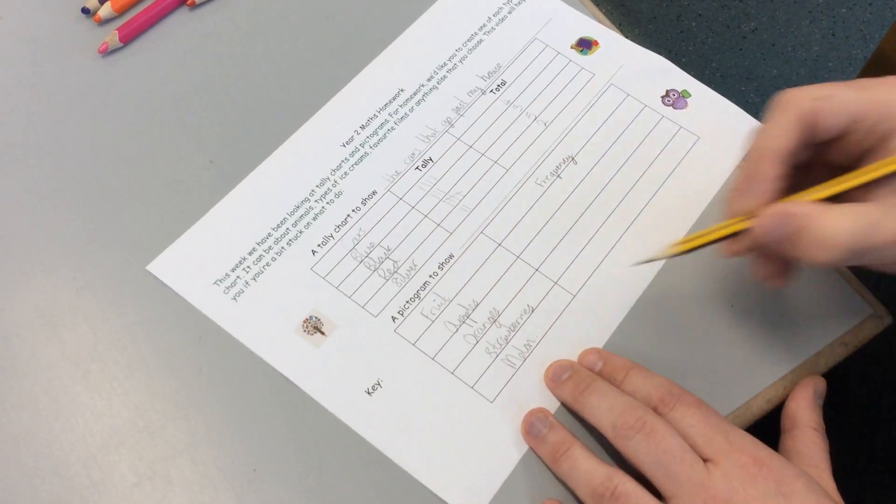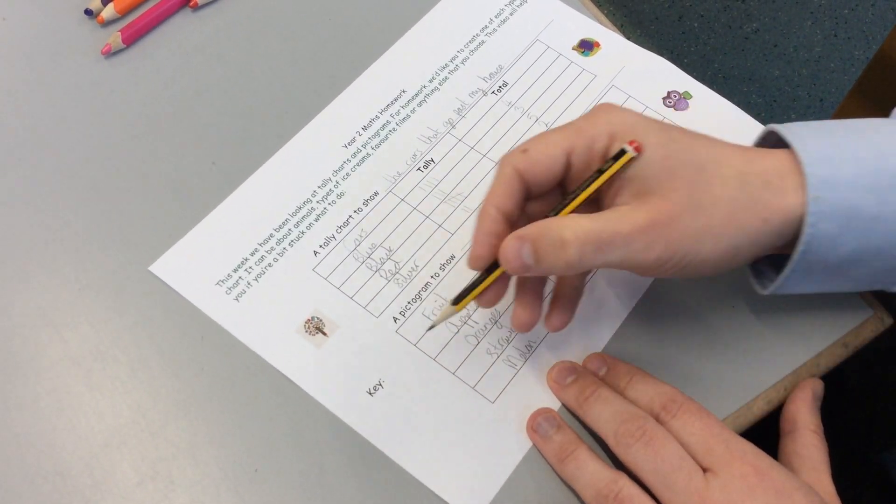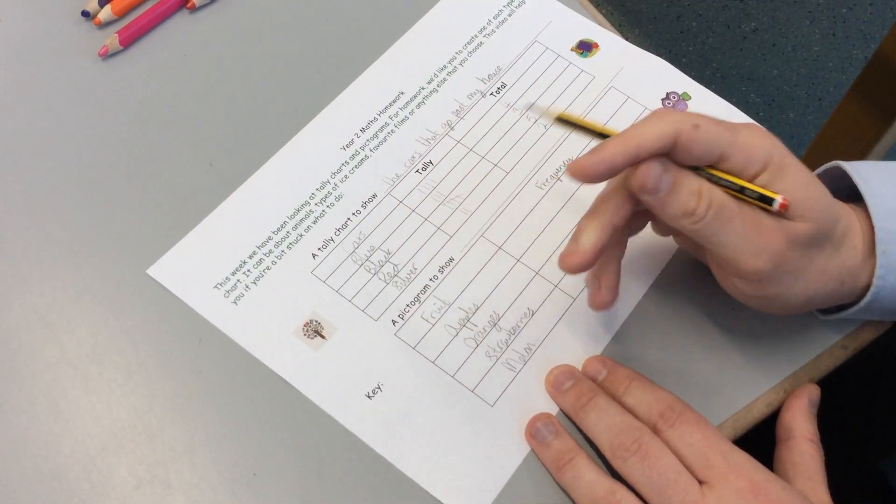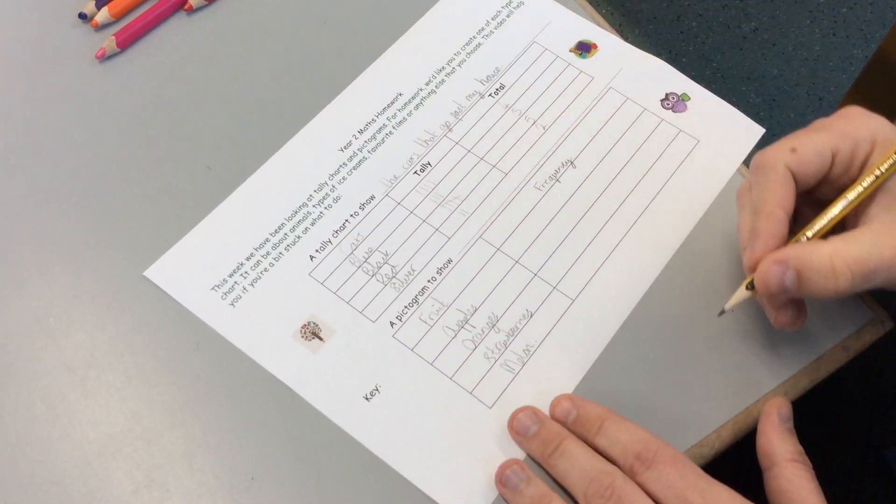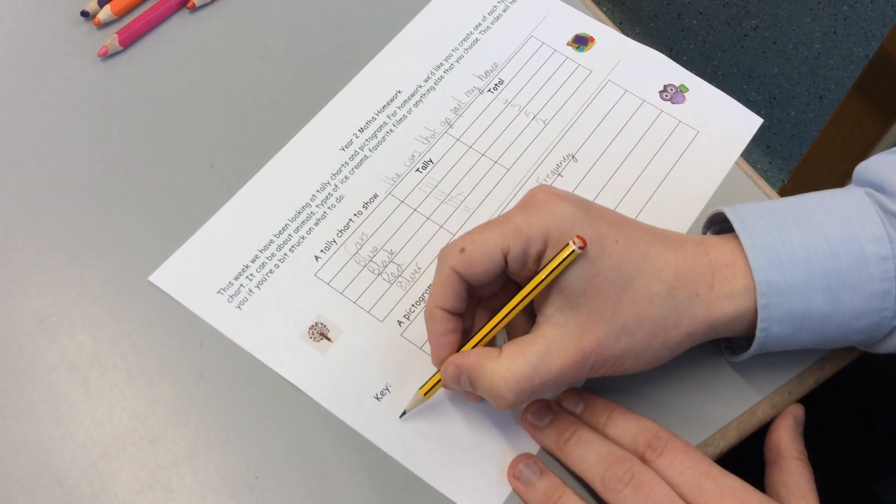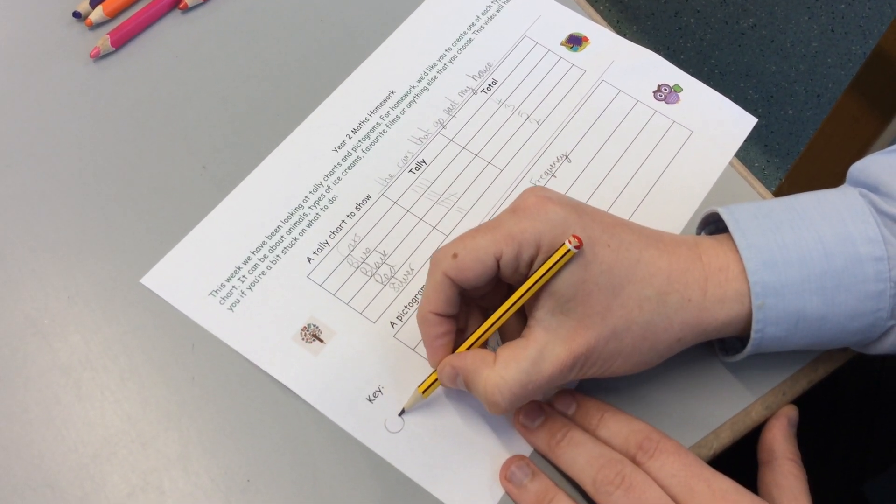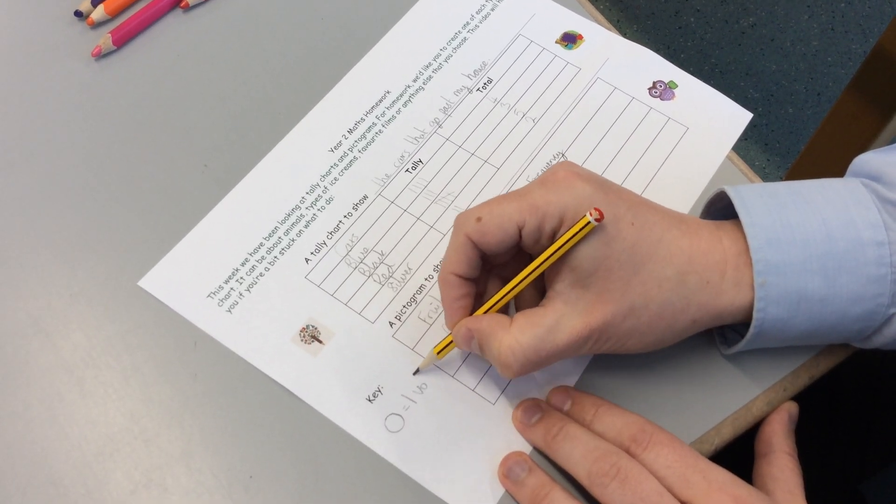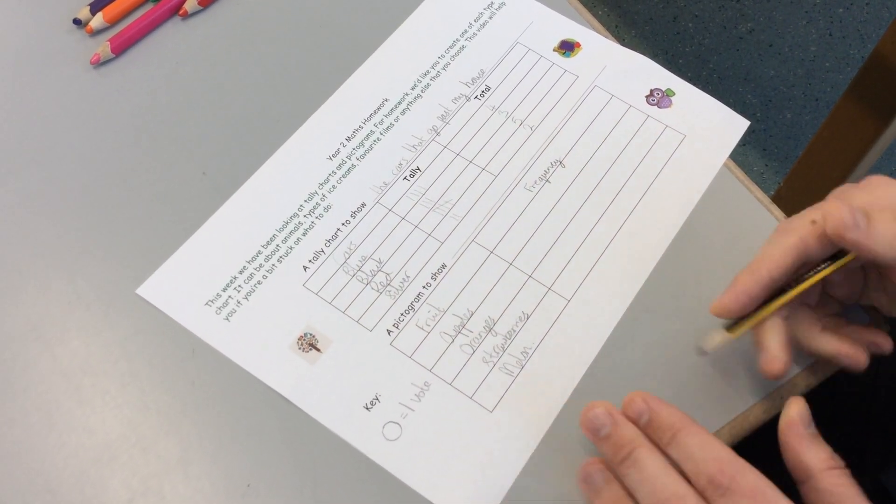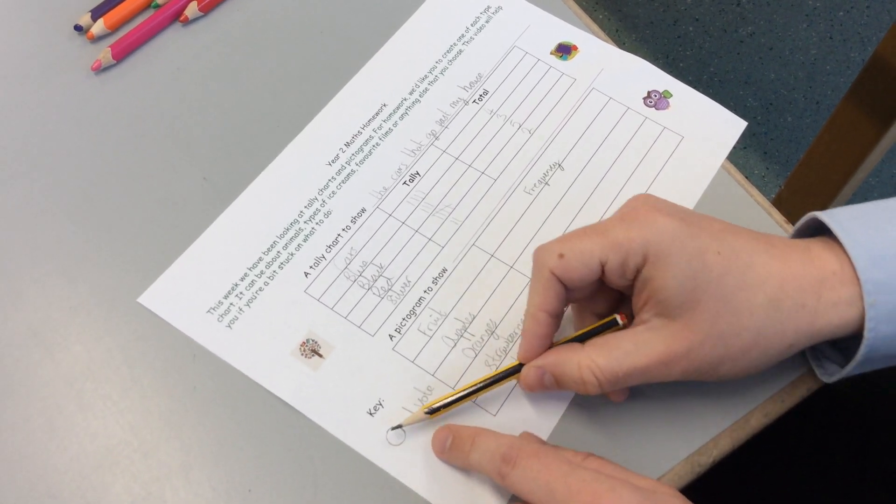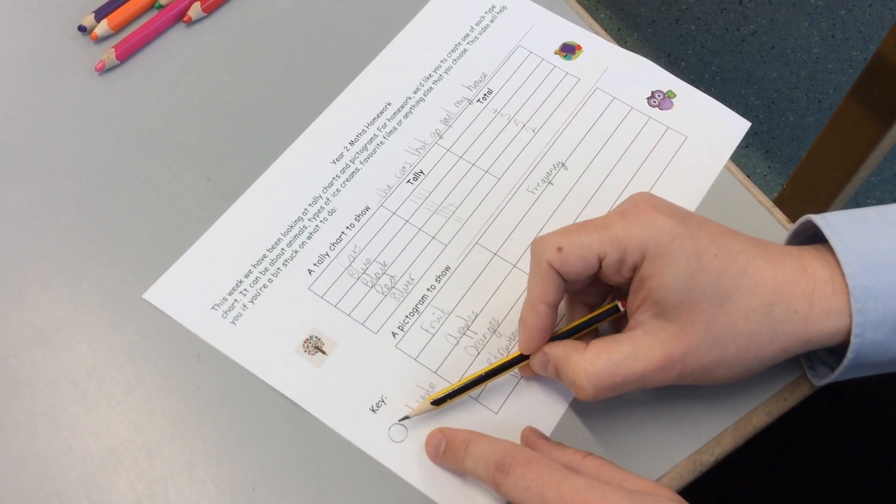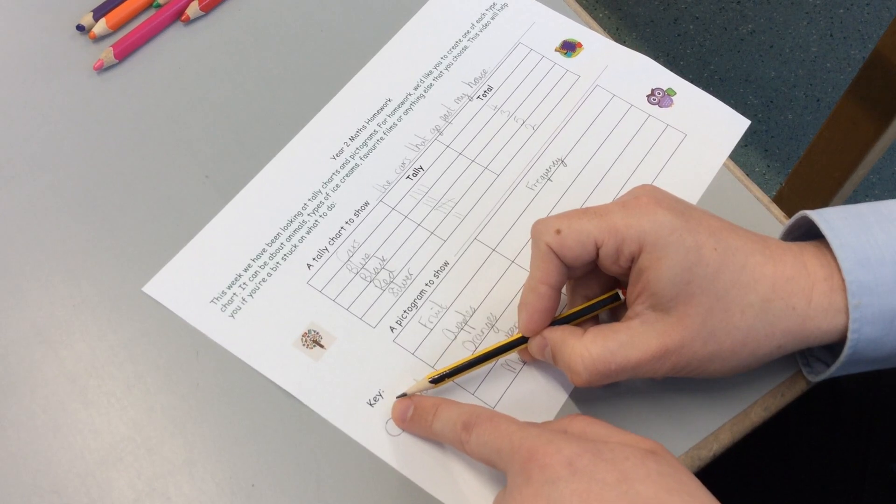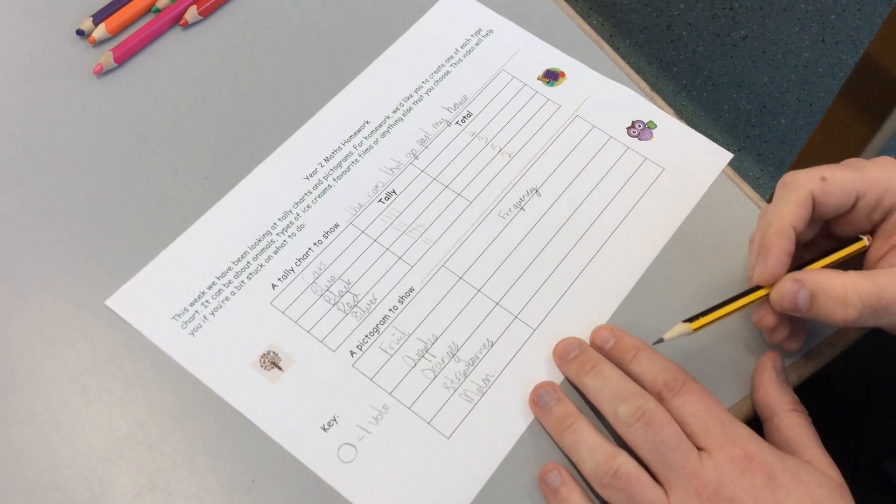And what I would need to do is I'd need to decide on the key. So I'm going to go for circles for mine. You could do crosses. You could do little pictures of the fruit. I'm just going to do circles. So my key is going to be that one circle is one vote. One person who's chosen it. Sometimes you get ones where a circle means two. So if it was three people, for example, you'd have a full one and half a circle. But for this one, I'm just going to do one.